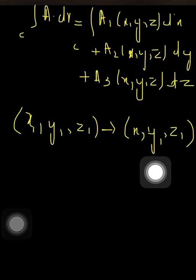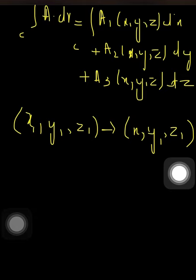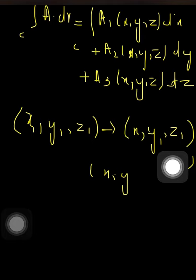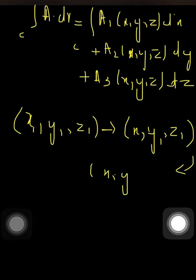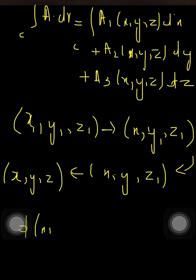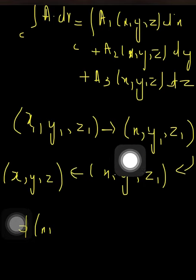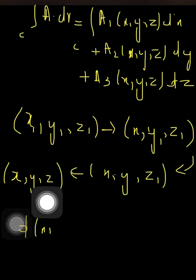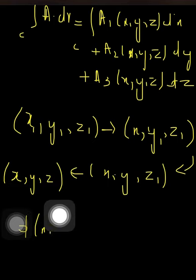I choose a particular path consisting of three line segments: from (x1, y1, z1) to (x, y1, z1), then from (x, y1, z1) to (x, y, z1), and then from (x, y, z1) to (x, y, z), as shown in the figure. I will find the line integral over each of these three paths.